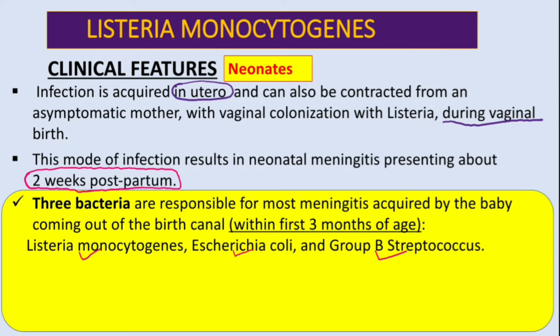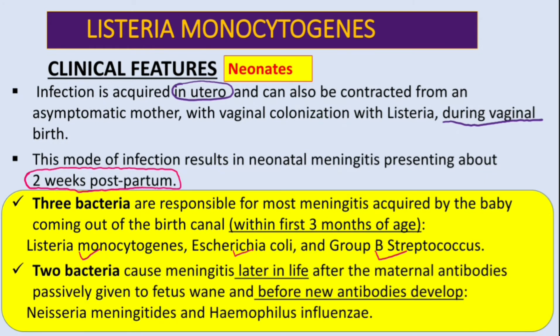After the first three months, two bacteria cause meningitis later in life — after maternal antibodies passively given to the fetus wane and before new antibodies develop. Later in life, meningitis can be caused by Neisseria meningitidis and Haemophilus influenzae, though remember there is now a vaccine for H. flu.